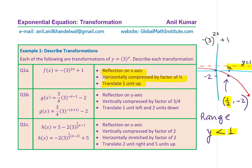Now let's look at question 1b. g(x) is given as (3/4) times 3 to the power of negative x minus 1, minus 2. The exponent of negative x minus 1 is very important to look at. You should factor this correctly to get the right horizontal transformation, otherwise you are going to make a mistake.